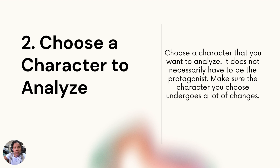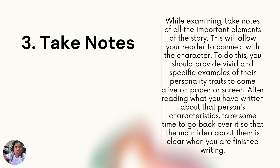You need to choose a character to analyze, and it doesn't necessarily have to be the protagonist. It can be either a major or a minor character, depending on the conformity of the character you're going to analyze. After choosing the character, the next step is to take down notes on the events that happen to the character and examine the important elements of the story that really affect the character.